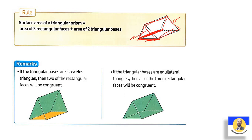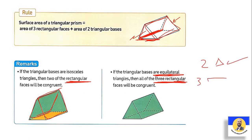If the triangular prism has an isosceles triangle base, then two of the rectangular faces will be congruent. لو هو isosceles يبقى two rectangular faces will be congruent. If the triangular base is equilateral, then all three rectangular faces will be congruent. لو equilateral triangle يبقى three rectangles تجيب الـ area بتاع أي واحدة فيهم وتعمل لها by three. لو isosceles triangle يعني two sides are the same، يبقى two rectangles are the same، والـ one rectangle اللي هو الـ base بيكون مختلف في الـ area.